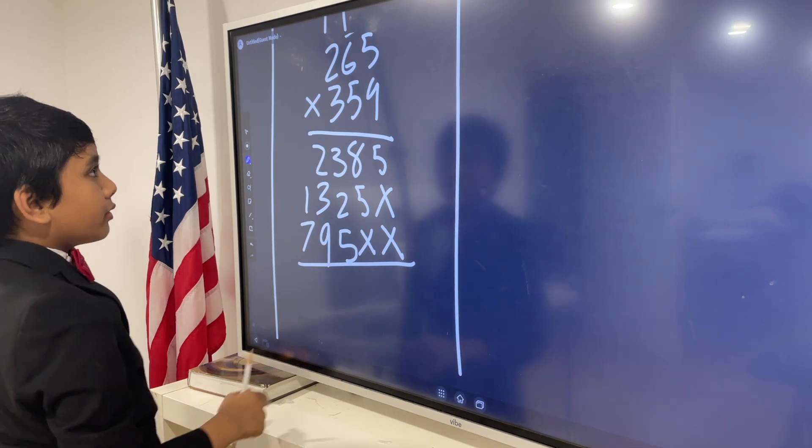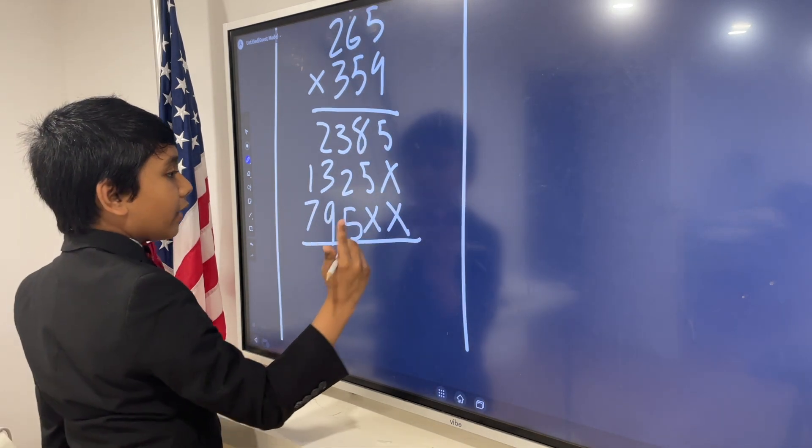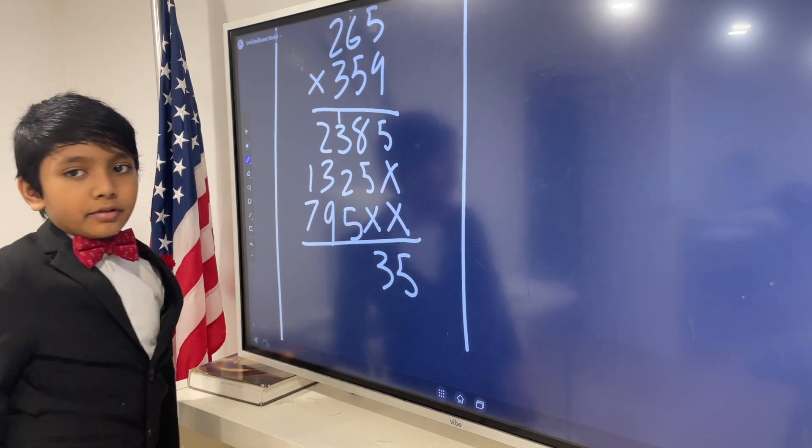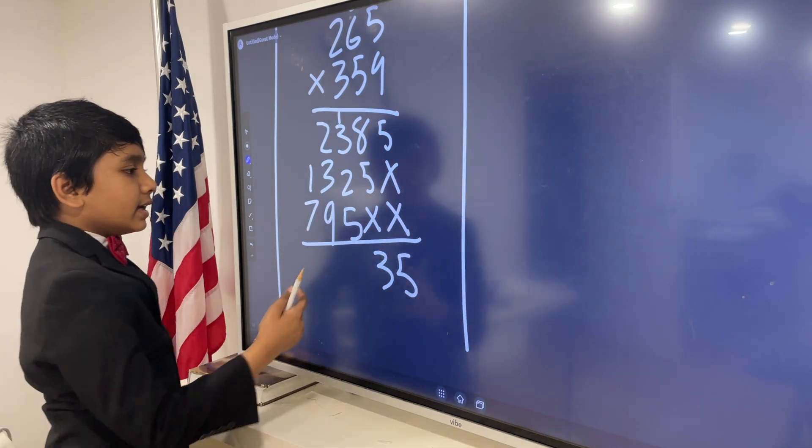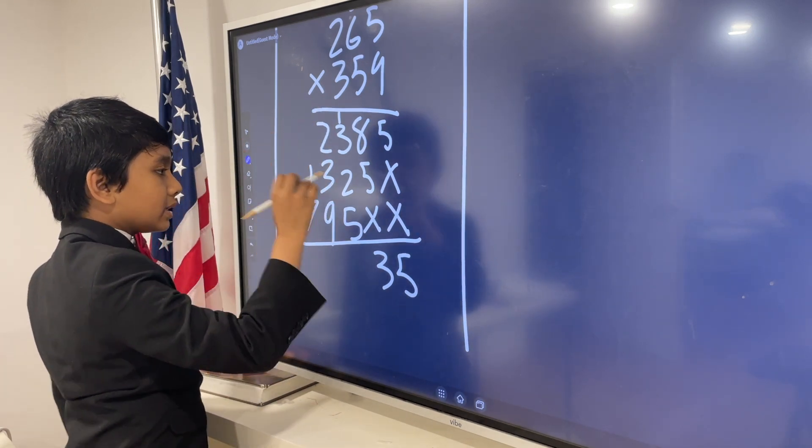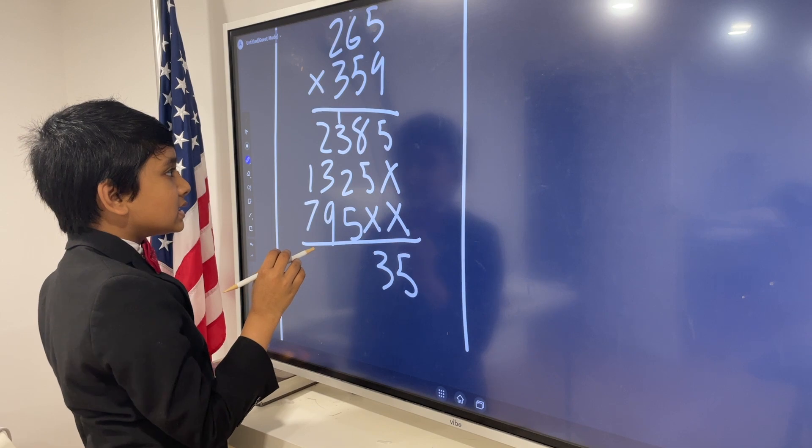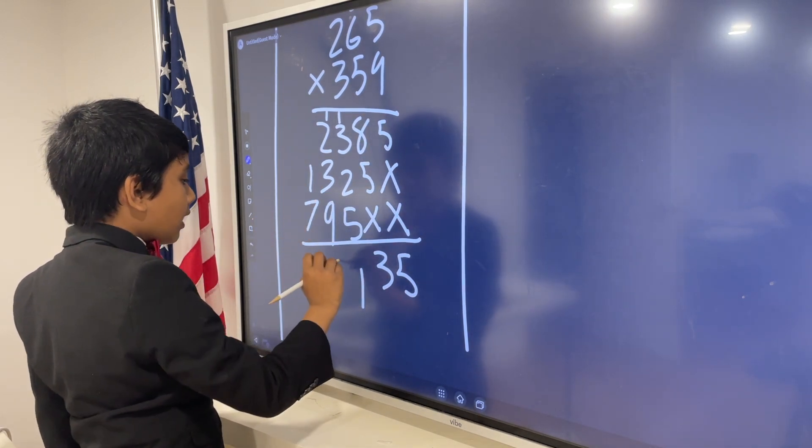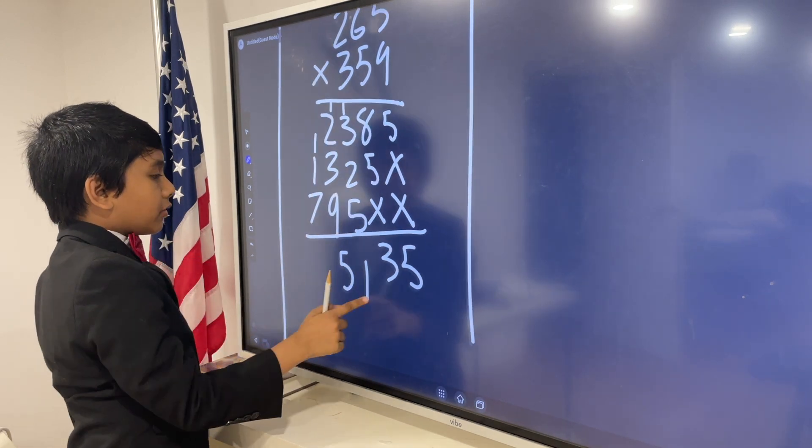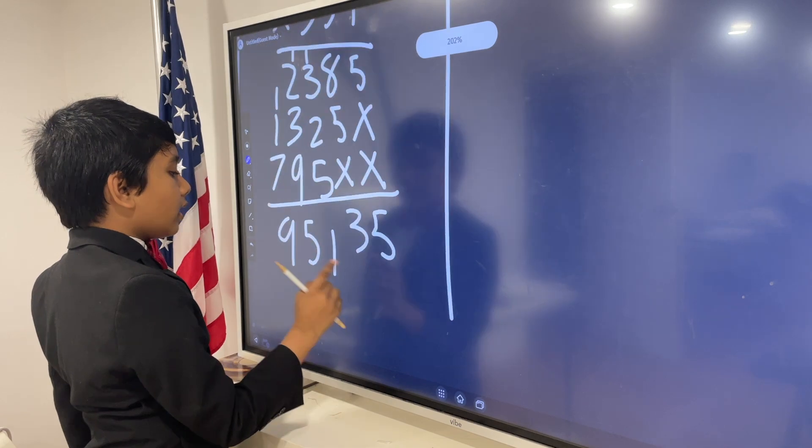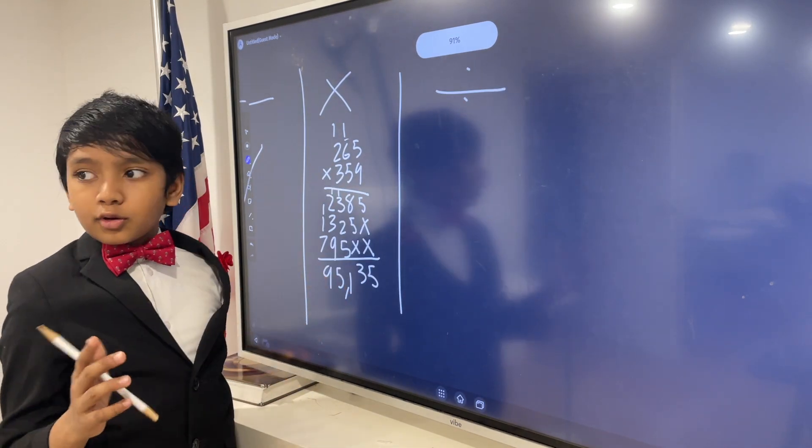So, now we are going to add what we have. 5, 3, and we carry the 1. It's really just like multiple digit addition. And then 1 plus 3 plus 2 plus 5 is 11. Then 1 plus 2 plus 3 plus 9 is 15. And then 1 plus 1 plus 7 is 9. 95,135.